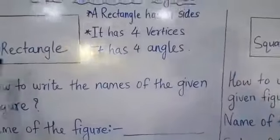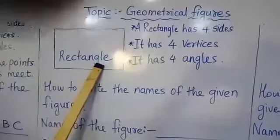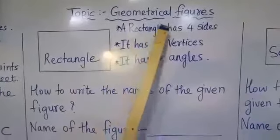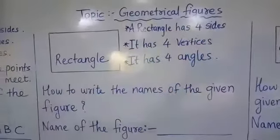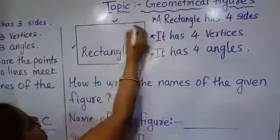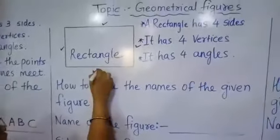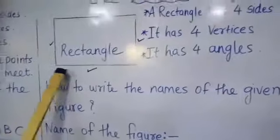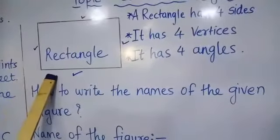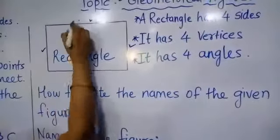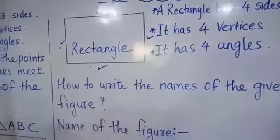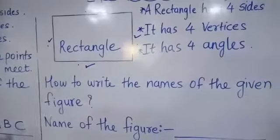Now we will move on to rectangle. A rectangle has four sides: one, two, three, and four. But in a rectangle, the opposite sides are equal — that is important. This side and the opposite side are equal, and this side and its opposite side are also equal.